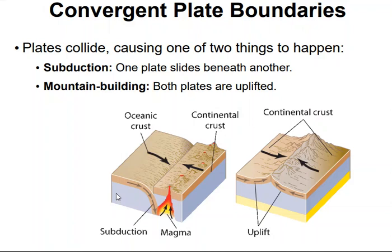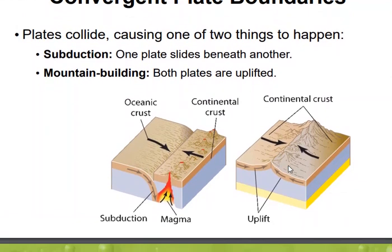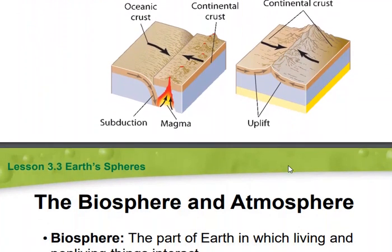The other thing that can happen if subduction doesn't occur is the two plates may collide, slowly lifting material from both plates in a process called mountain building. The Himalayas, which are the world's highest mountains, formed through mountain building — they are the result of the Indian-Australian plate's collision with the Eurasian plate 40 to 50 million years ago. To this day, the Himalayas are still slowly uplifting higher and higher. Make sure you know the different vocabulary terms that describe the pictures here.